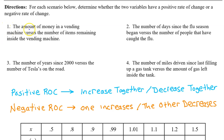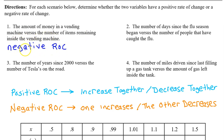Number one: the amount of money in a vending machine versus the number of items remaining inside the vending machine. These quantities will have a negative rate of change because as the money inside the vending machine increases, the number of items decreases.